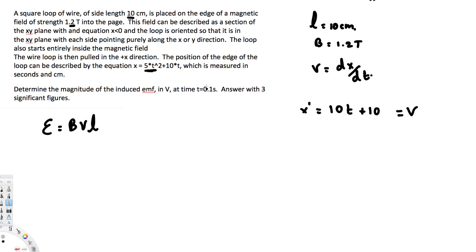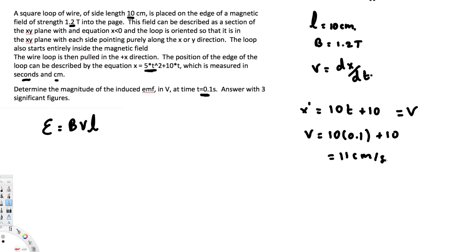The units are centimeters per second, and the time given is t = 0.1 seconds. Plugging in: v = 10(0.1) + 10 = 1 + 10 = 11 centimeters per second.